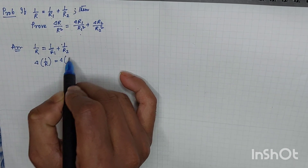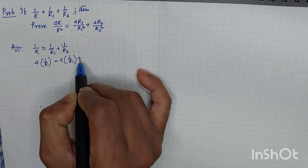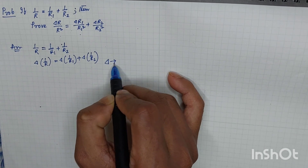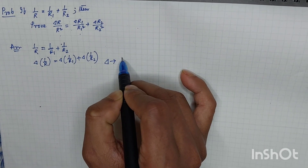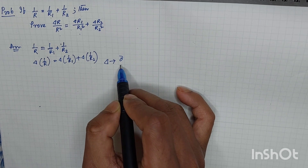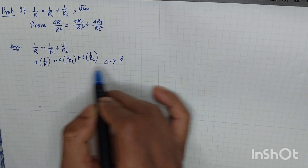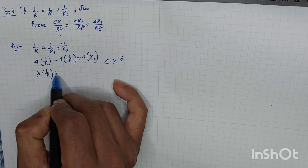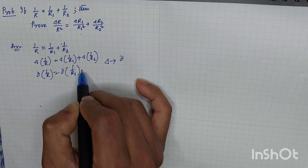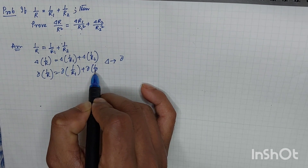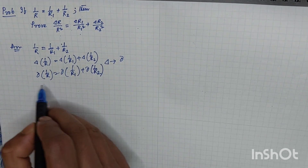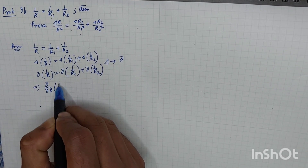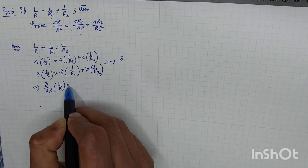Let's start. I am writing: Δ(1/R) = Δ(1/R1) + Δ(1/R2). I am replacing this Δ — actually I want to take the derivative of this. So I write: d/dR × (1/R) × ΔR = d/dR1 × (1/R1) × ΔR1 + d/dR2 × (1/R2) × ΔR2.